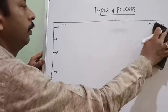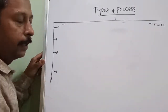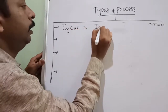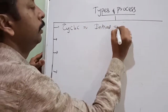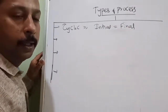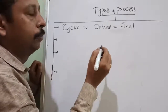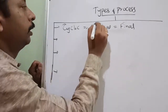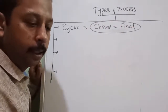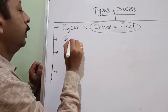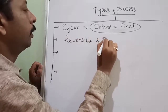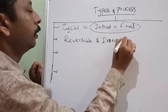Next one is cyclic process — after going through various states, it returns to the initial state. That is a cyclic process. The second classification is reversible and irreversible processes.